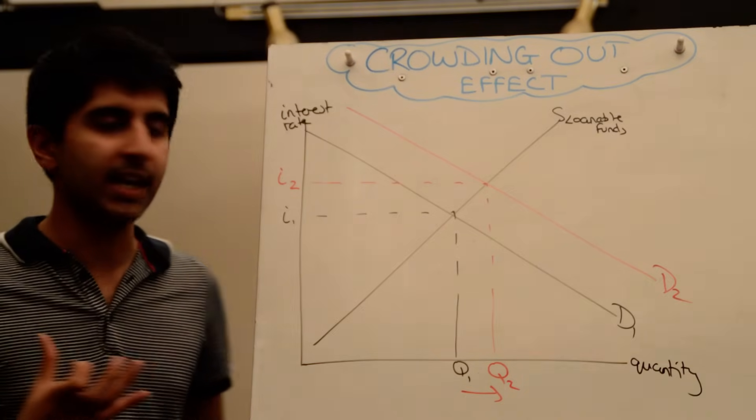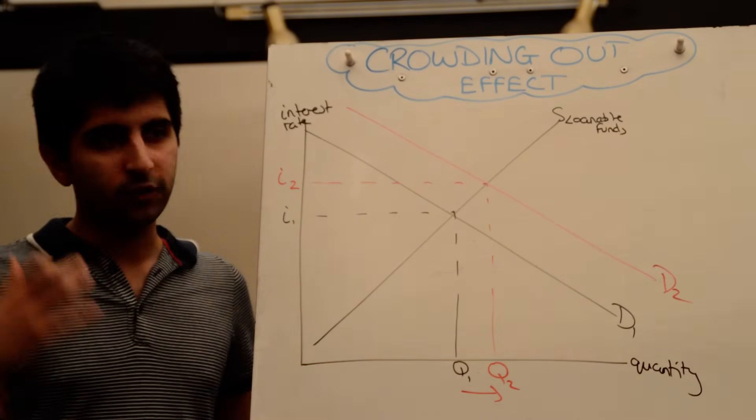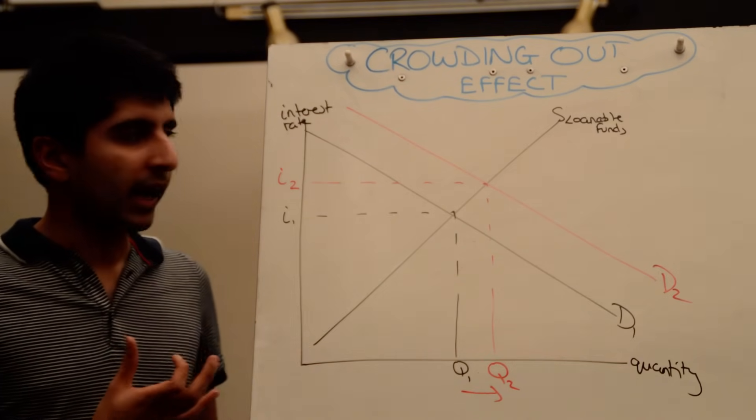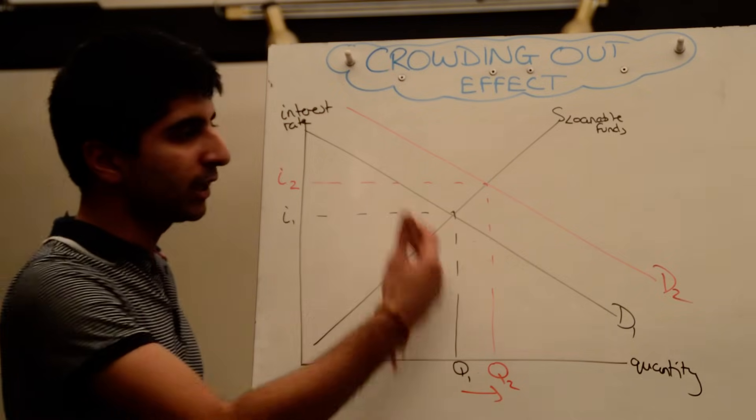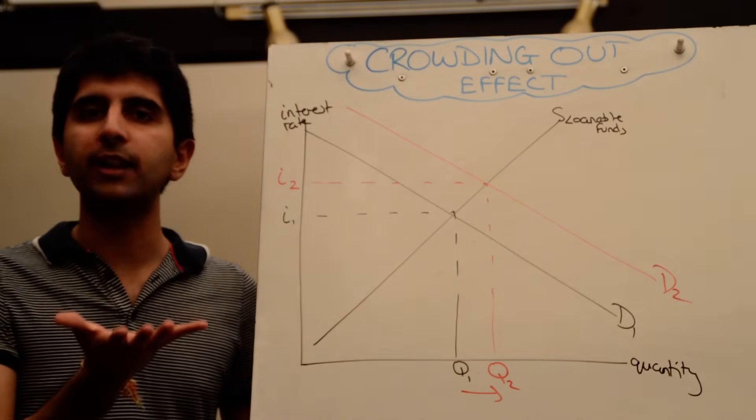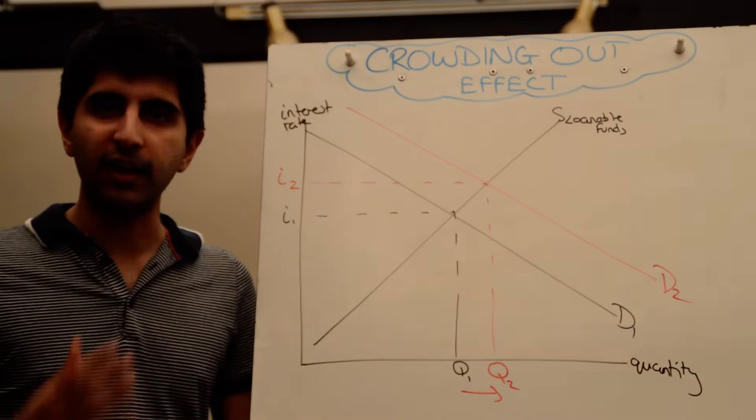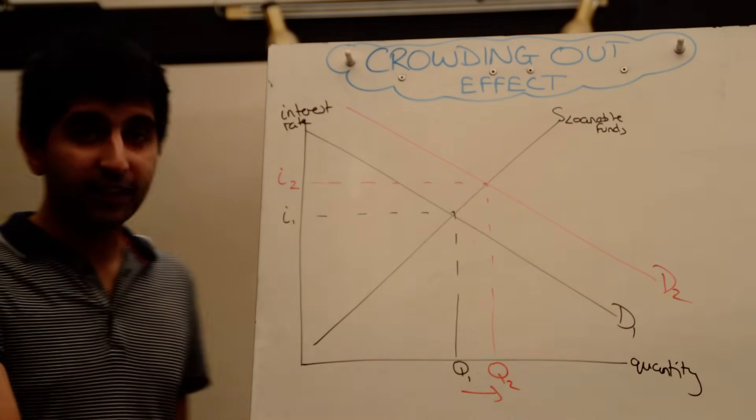That's the idea here. If the government spends via excessive borrowing, you can expect a crowding out effect, where in the loanable funds market, demand increases excessively, increasing interest rates and market rates for firms, holding back investment and therefore future growth. That's the crowding out effect.